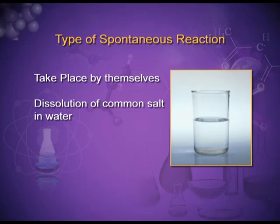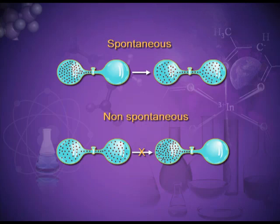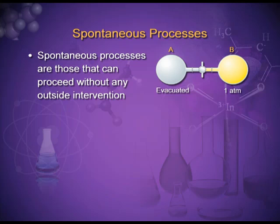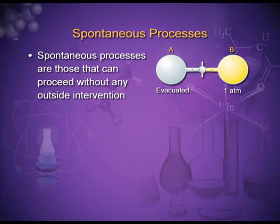In the figure, there is a gas in one chamber with a partition, and the other chamber is evacuated. When we remove the partition, the gas diffuses from one chamber to the other automatically and naturally by itself. But the reverse process does not take place on its own — the reverse process is non-spontaneous. The gas in vessel B will spontaneously effuse into vessel A, but once the gas is in both vessels, it will not spontaneously separate.